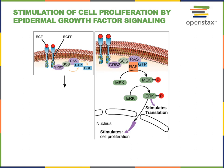Then the active EGFR will stimulate the small G protein RAS. Once activated, RAS will in turn activate a kinase known as RAF, and RAF is the first kinase in the ERK phosphorylation cascade. RAF will phosphorylate MEK, activating it, and MEK will phosphorylate ERK, activating it.